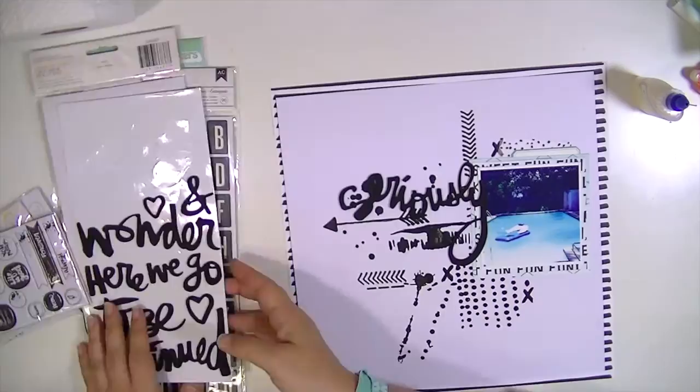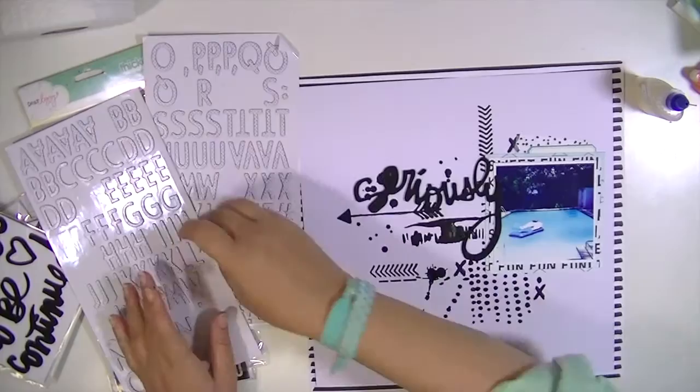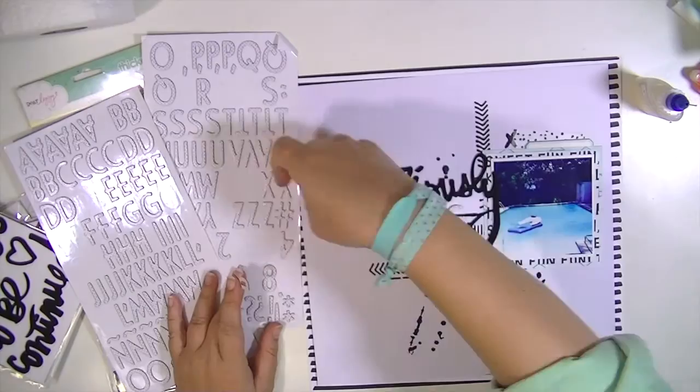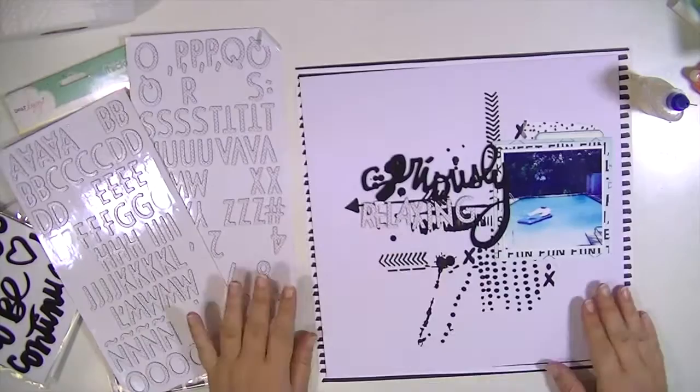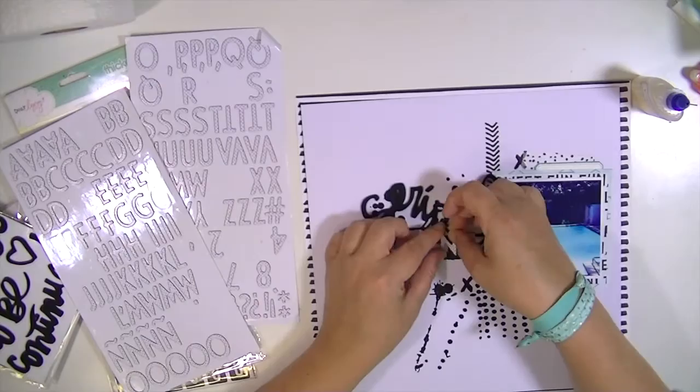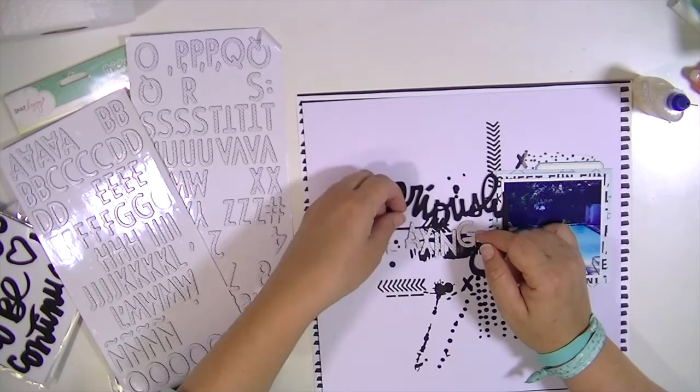I did add a little bit of Glossy Accents to the back of my photo just because that paint does have a little bit of dimension and I wanted to make sure that picture didn't go anywhere. I'm going to add another word to the title which is going to be Relaxing, so it'll be Seriously Relaxing. And then I'm going to add just a couple more embellishments, some enamel dots and a couple of things in the upper left-hand corner, and that will be it.